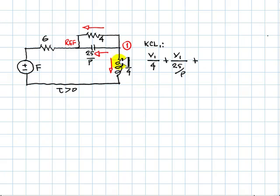And current in the inductor, V1 minus V of the reference plus the value of the source, divided by the impedance of that branch, which is 6 ohms plus P over 4. And that is equal to zero.